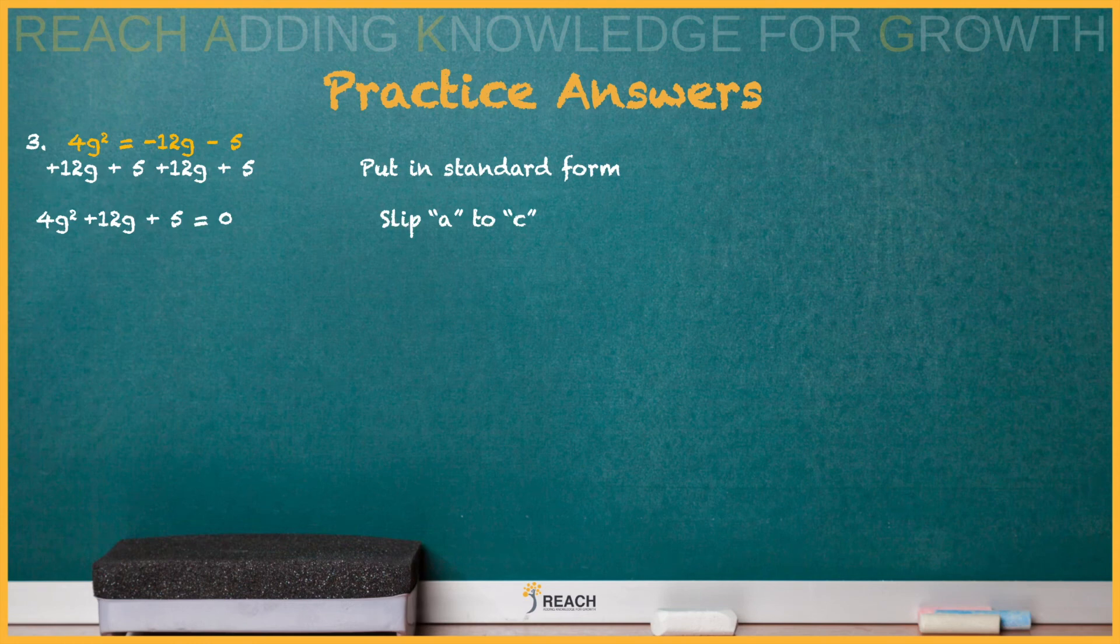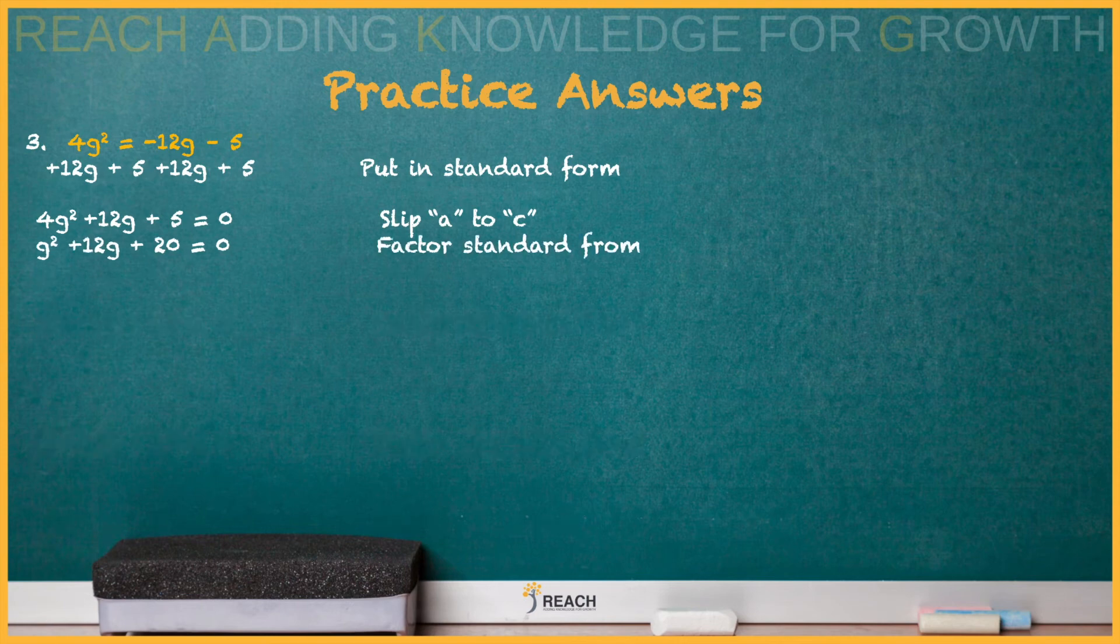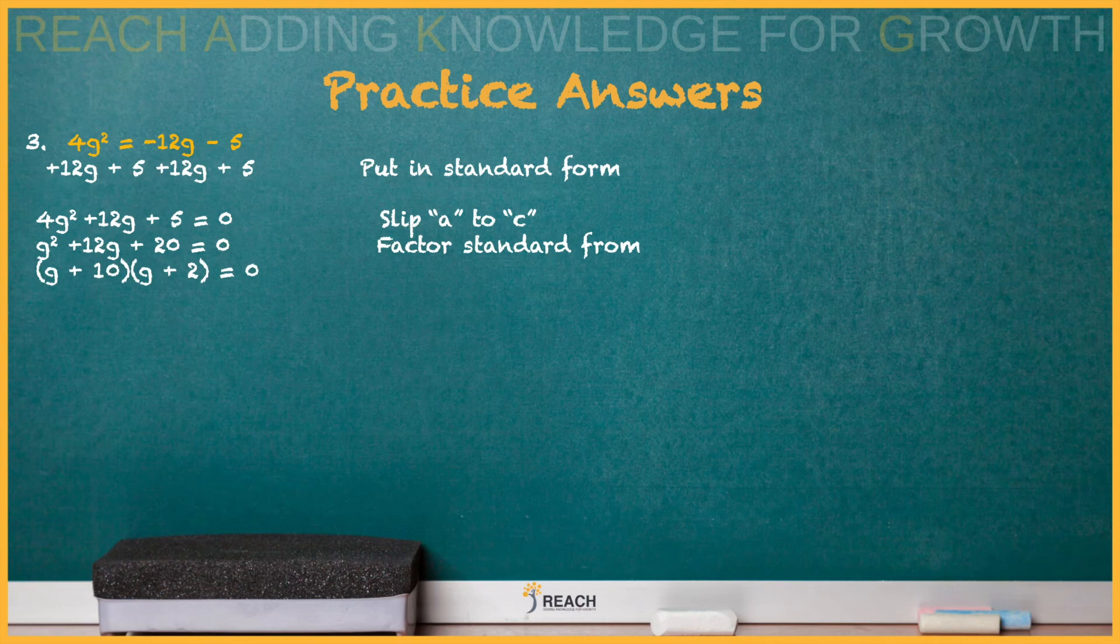Now we got to use the slip and slide. So a times c, that's 20. And now this is standard form when a is 1. Find the two numbers that multiply to give you 20 and add to give you 12.